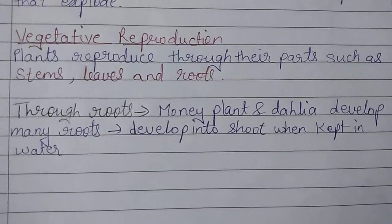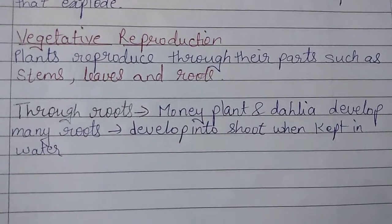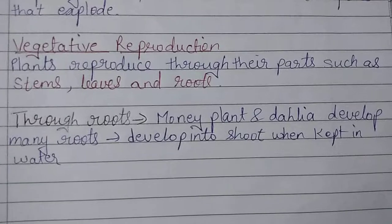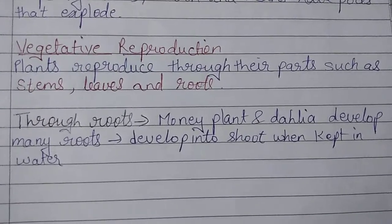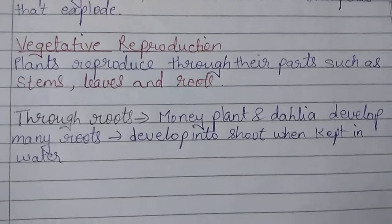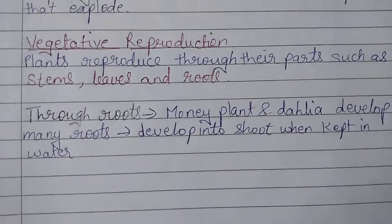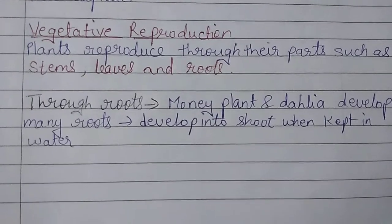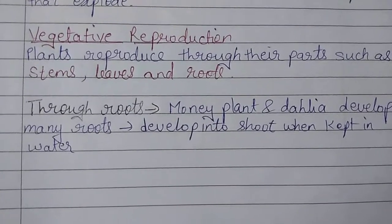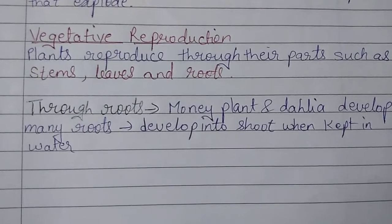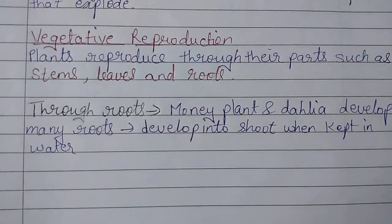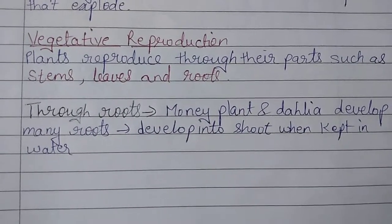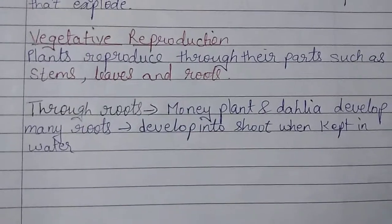Let us see vegetative reproduction. Plants can reproduce in two ways: first, reproduction through seeds, and second, reproduction through other parts of the plant — stems, leaves, and roots. We have studied reproduction through seeds. Now we will study reproduction through other parts of the plant, which is known as vegetative reproduction.